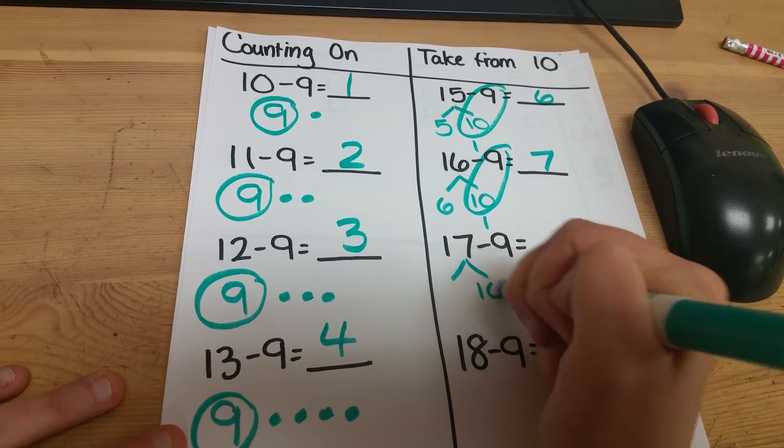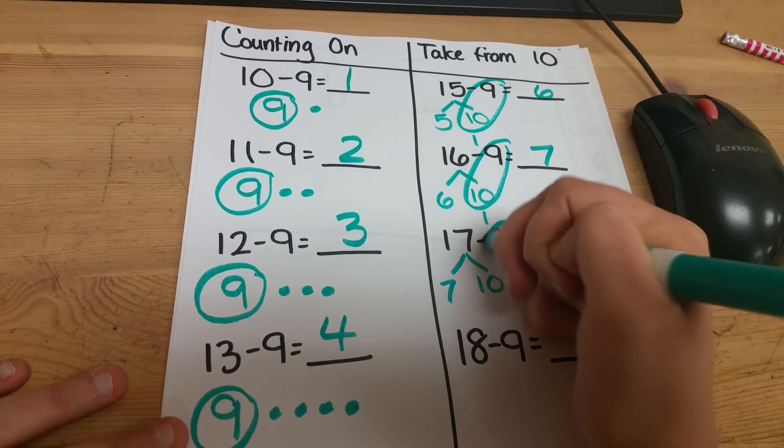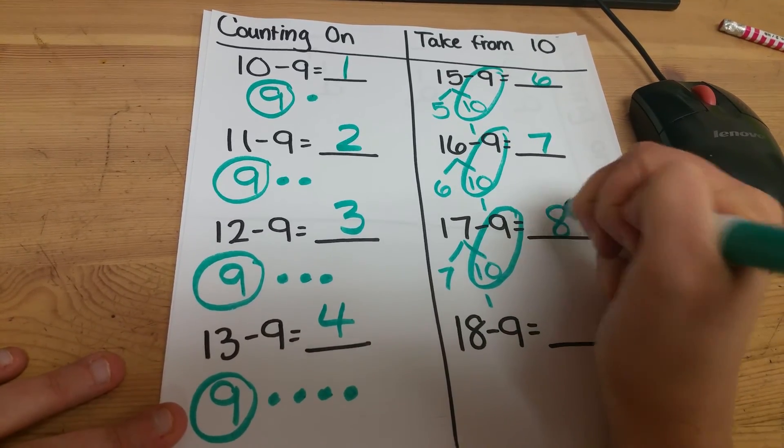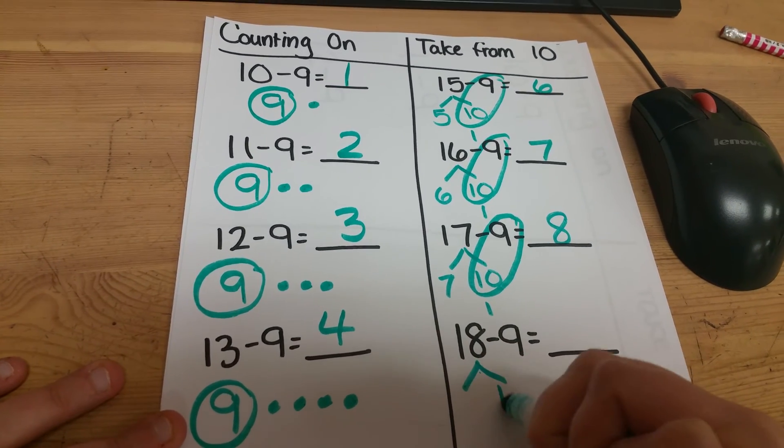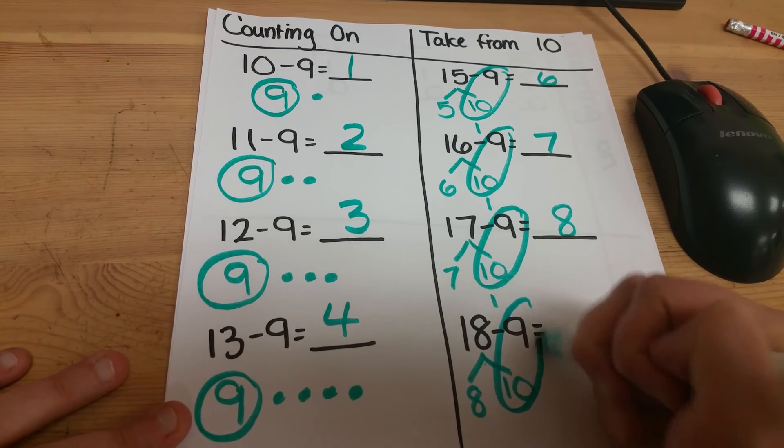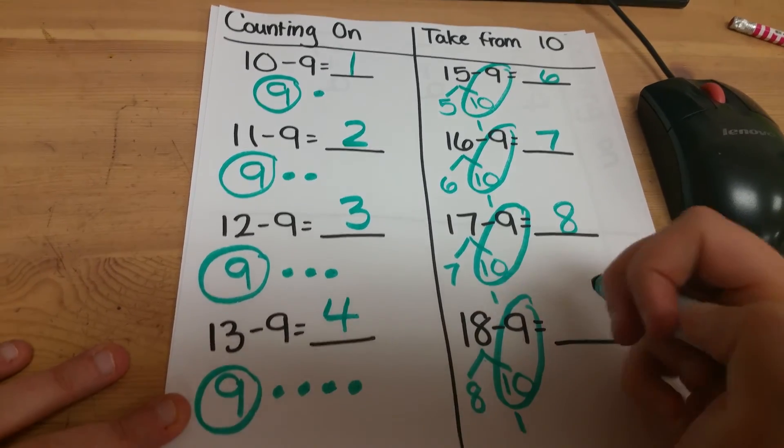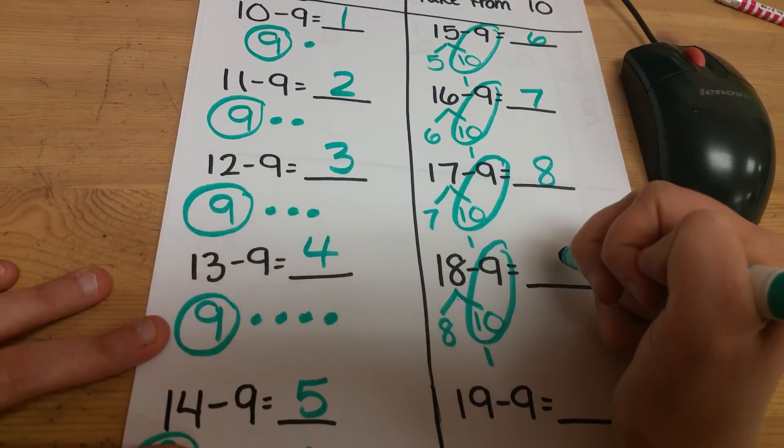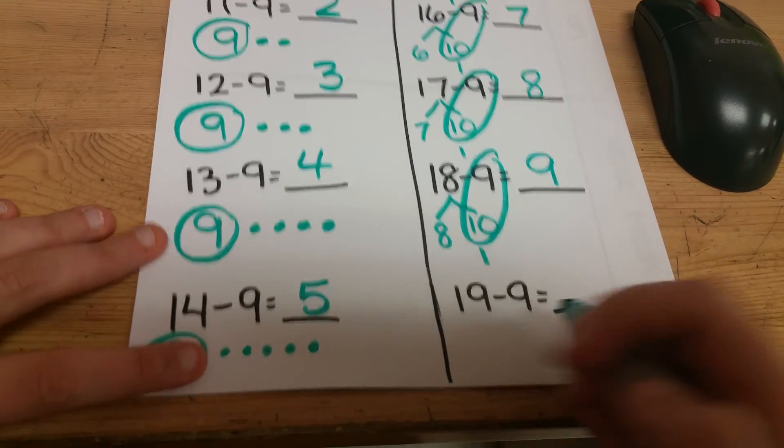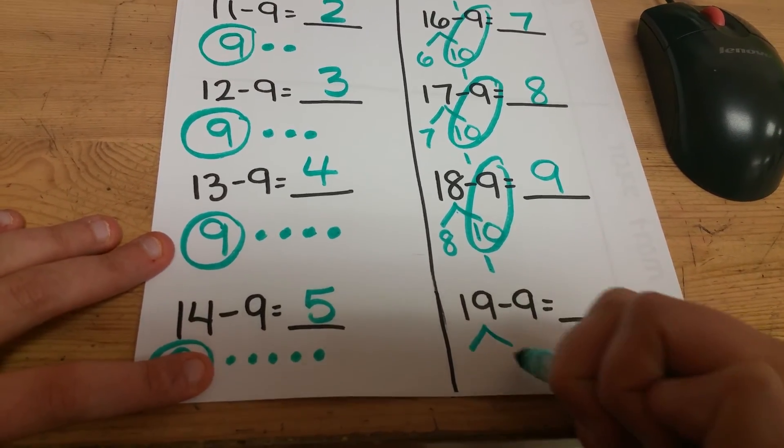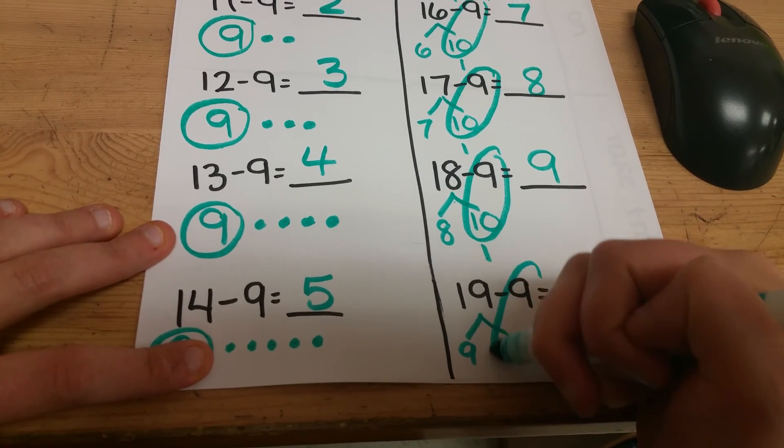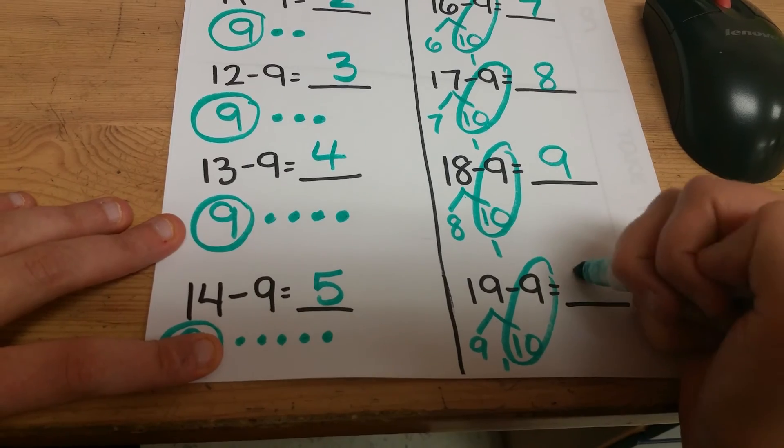The students will have many opportunities to practice using both methods. Sometimes using both methods to solve the same problem so they can see which one is more efficient. But we do want them to understand that it is more efficient to solve problems that are close to 9, starting with the number close to 9 using counting on. And problems there, it gets a little further away from 9, it's more efficient to do the take from 10 method.